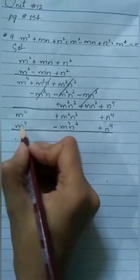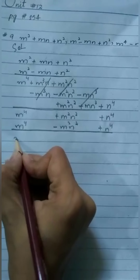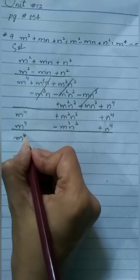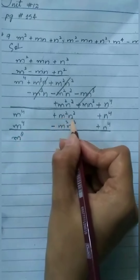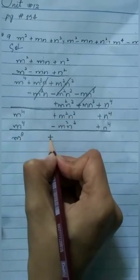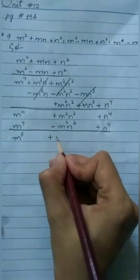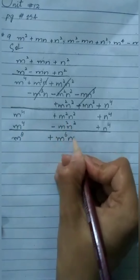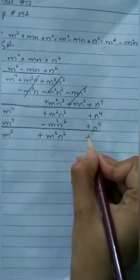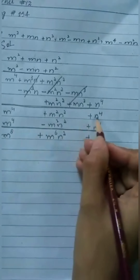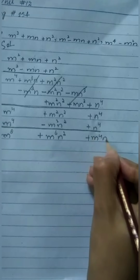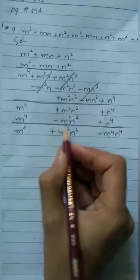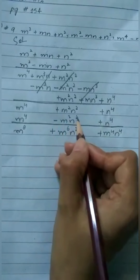Now we multiply. m⁴ multiplied by m⁴: 4 plus 4 equals 8, giving m⁸. Then m⁴ multiplied by m²n²: 4 plus 2 equals 6, giving minus m⁶n². Now the second term: minus m²n² multiplied by m⁴.